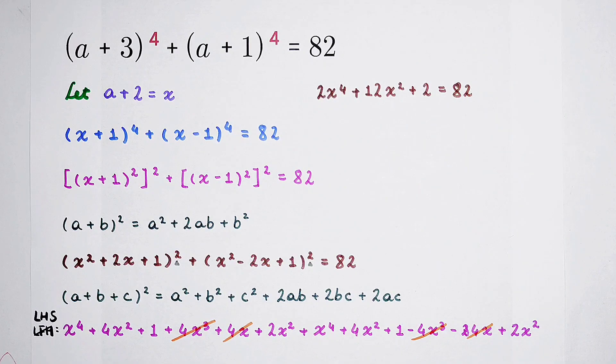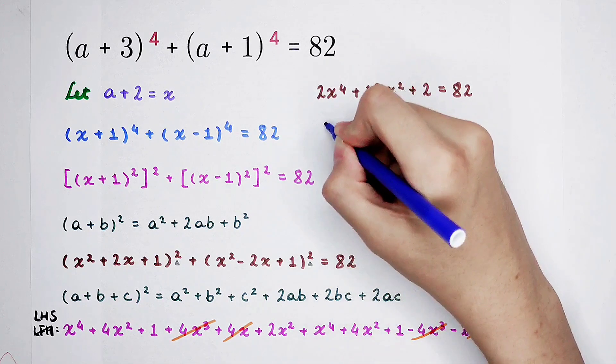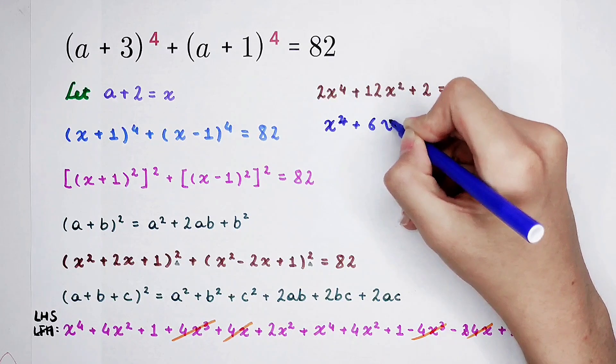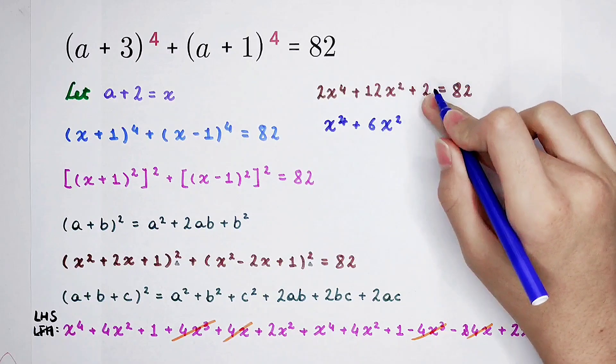So then, what should you do? Divide both sides by 2. You can get x to the power 4 plus 6x squared plus 1 is equal to 41.